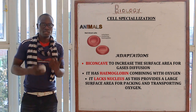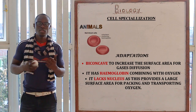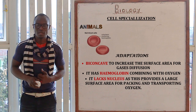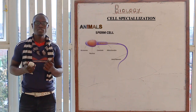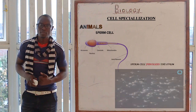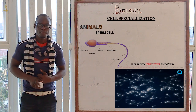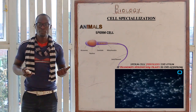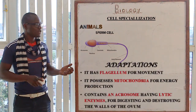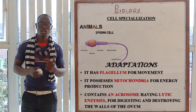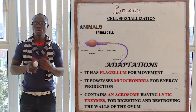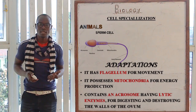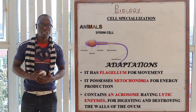The red blood cell also lacks a nucleus, which provides a large area by which oxygen or dissolved gases will be transported inside the red blood cell. The other specialized cell in animals is the sperm cell. The function of the sperm cell is to fertilize the ovum, and it also transmits hereditary traits to the offspring. Adaptations include a very strong tail called flagellum for propulsion, a large amount of mitochondria for energy production, and the head contains lytic enzymes for easier digestion of the ovum walls for easier penetration.